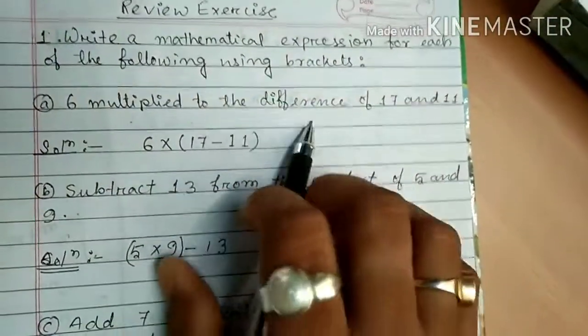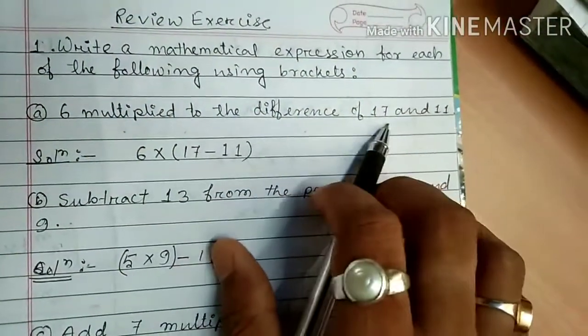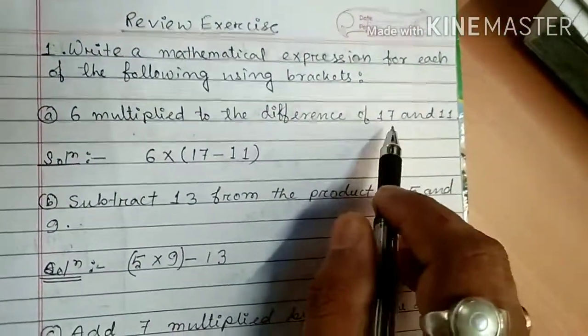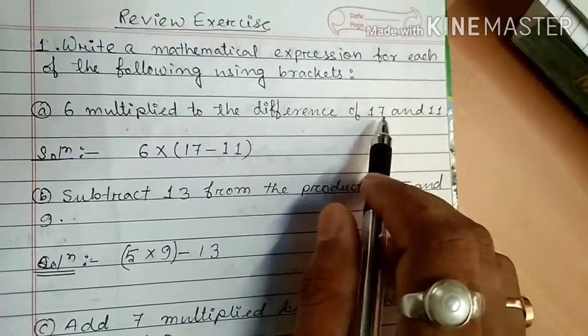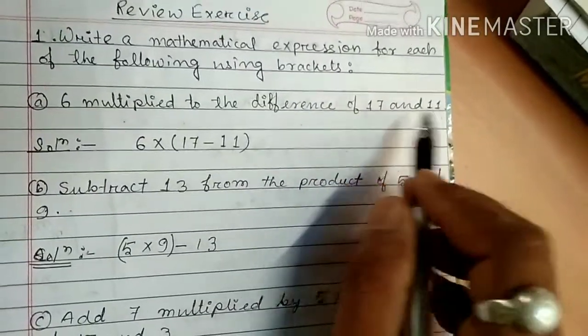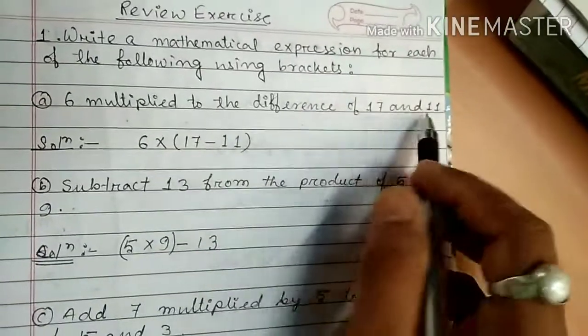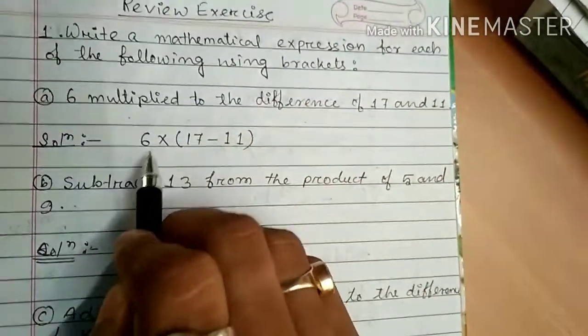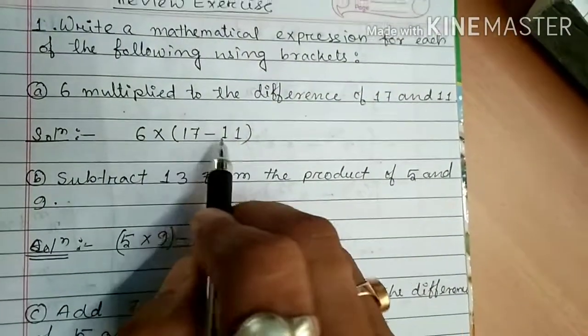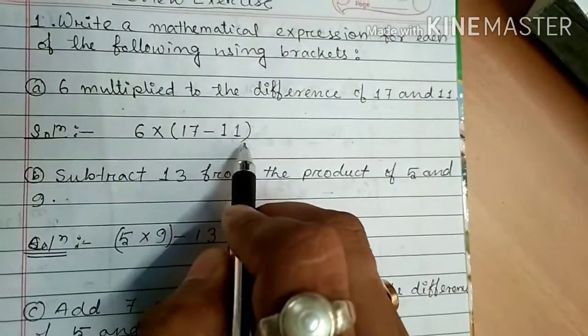First: '6 multiplied to the difference of 17 and 11.' Find the difference of 17 and 11, which means 17 minus 11. And you have to multiply this by 6. That is 6 into (17 minus 11).